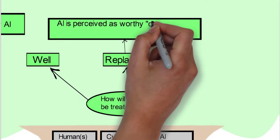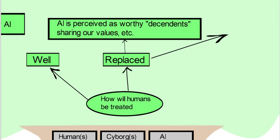If we get replaced, then we get replaced because AI is perceived as a worthy descendant. It's sharing our values, et cetera.